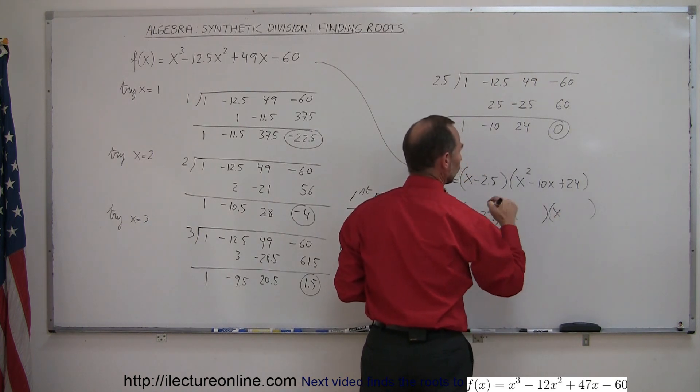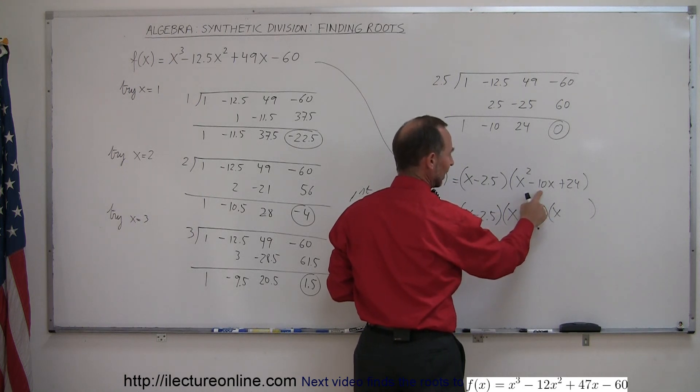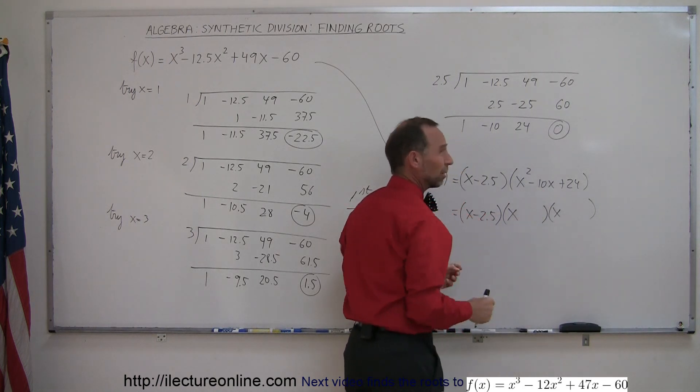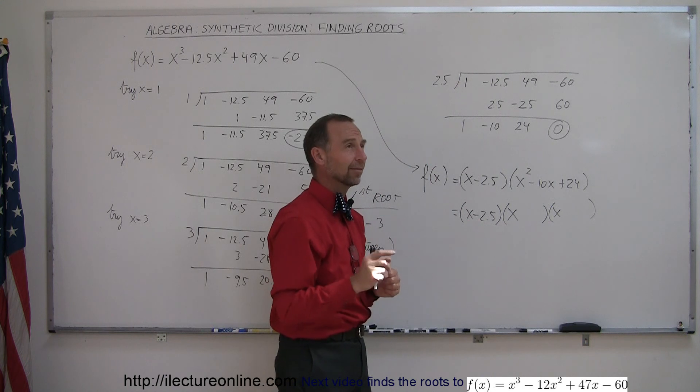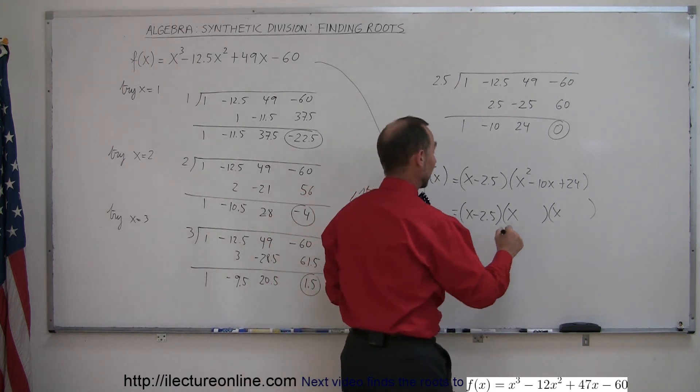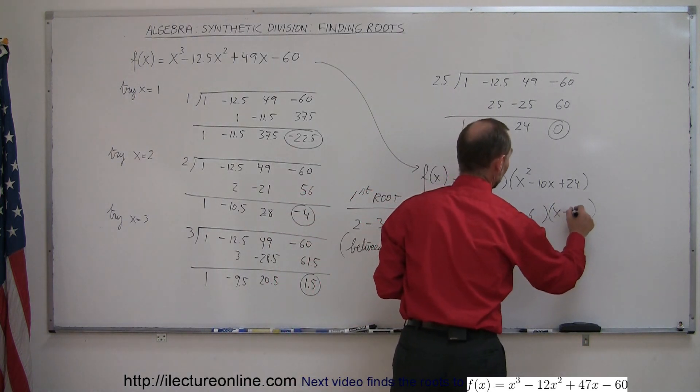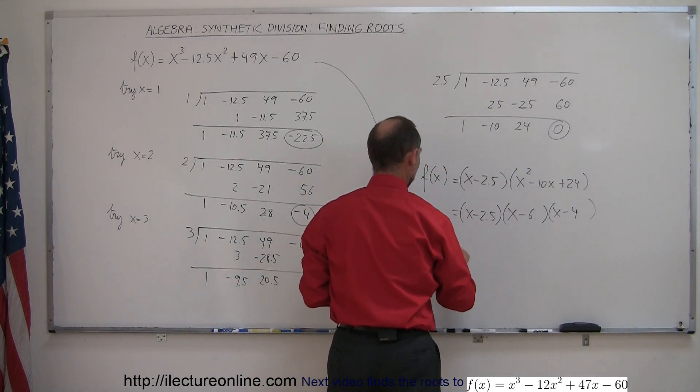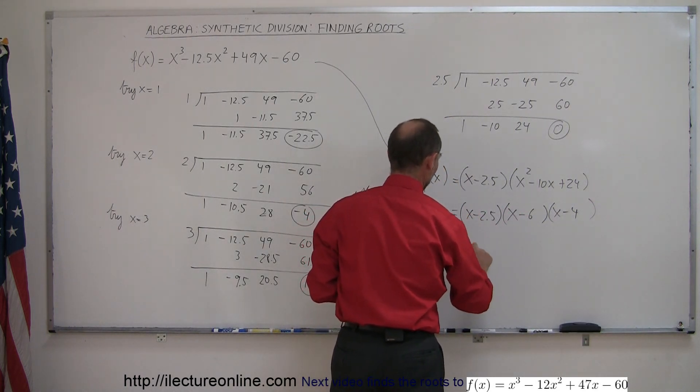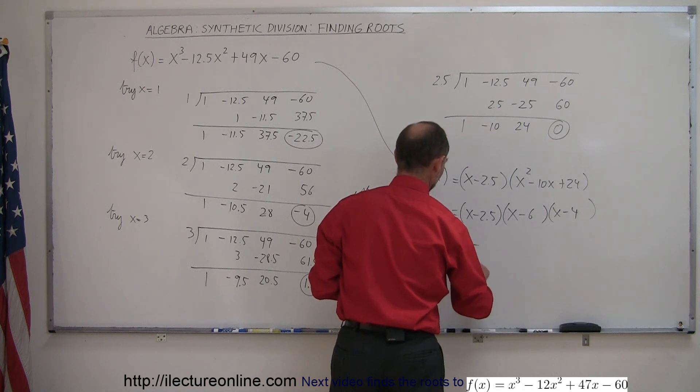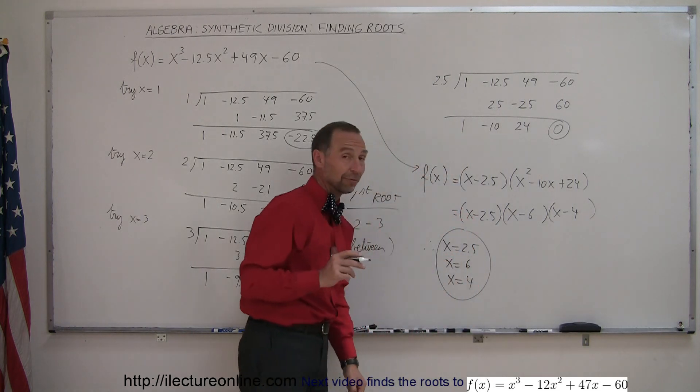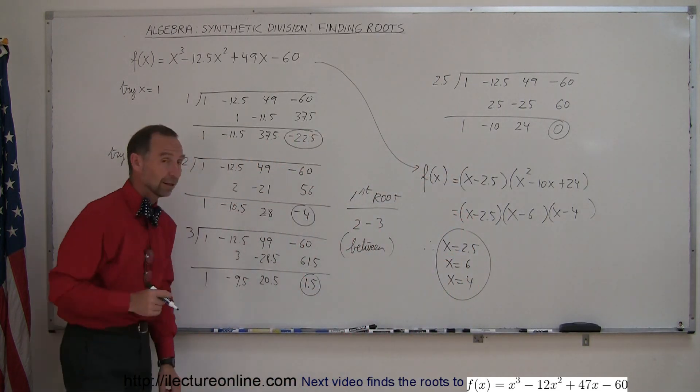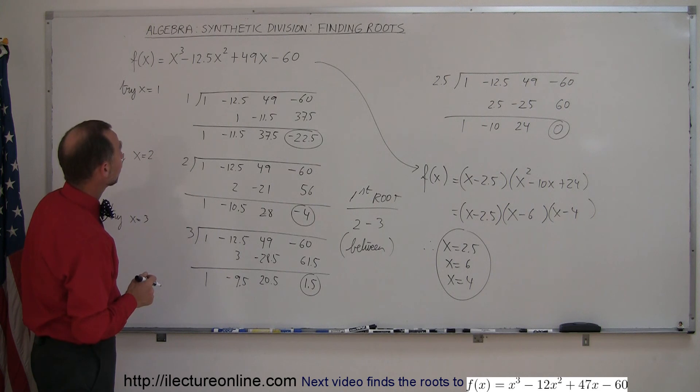We have x minus 2.5 times the product of two binomials: x and x. Two numbers when I add I get minus 10, when I multiply I get 24, so they both need to be negative. A 6 and a 4 gives me 24, so x minus 6 and x minus 4. Therefore, the three roots are x equals 2.5, x equals 6, and x equals 4.